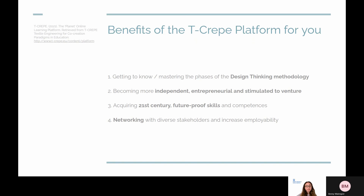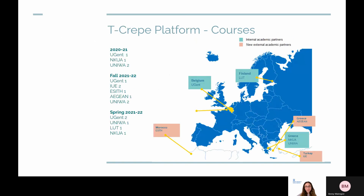So far, the T-CREP platform was used in 11 courses in total from Ghent University, NKUA, and UNIVA, which are our internal academic partners, and external academic partners, which are Izmir University of Economics, ESSET, and Aegean University. This semester, we have six more courses in which the T-CREP platform and the Choiko games are used.